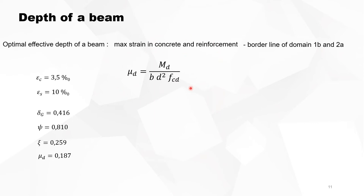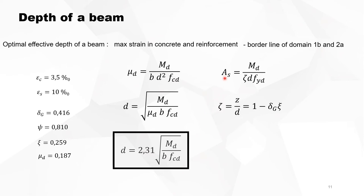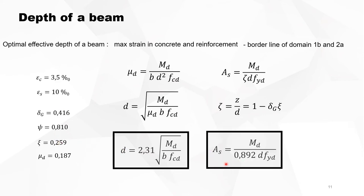Using the general formula of the reduced bending moment and substituting µD = 0.187, we arrive at the formula for D optimum — the optimum effective depth of a beam subjected to bending moment MD, with width B and concrete quality fcd. When we design a beam with this depth, we can calculate the reinforcement directly because zeta of D equals 1 minus delta_G times xi, where xi = 0.89. So the reinforcement is the bending moment divided by 0.89 times the effective depth times the yield strength of the steel.